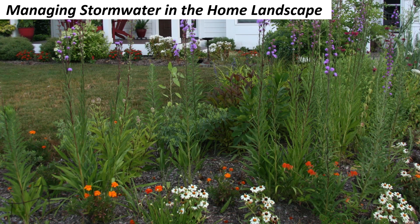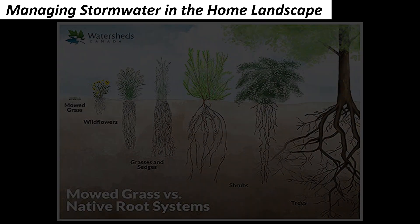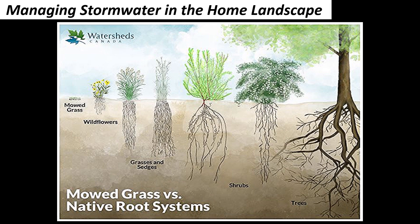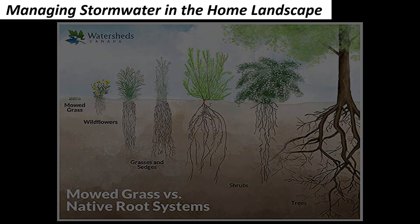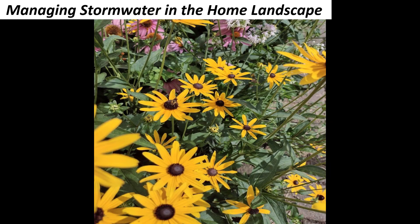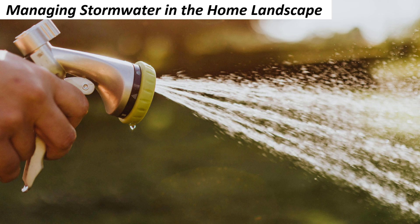Another way to manage stormwater flow at home is to plant native flowers, shrubs, and trees, because native plants have extensive root systems that are good for slowing and filtering stormwater as it flows across your landscape. Native plants are also adapted to your local climate, so they will require less water once they are established.